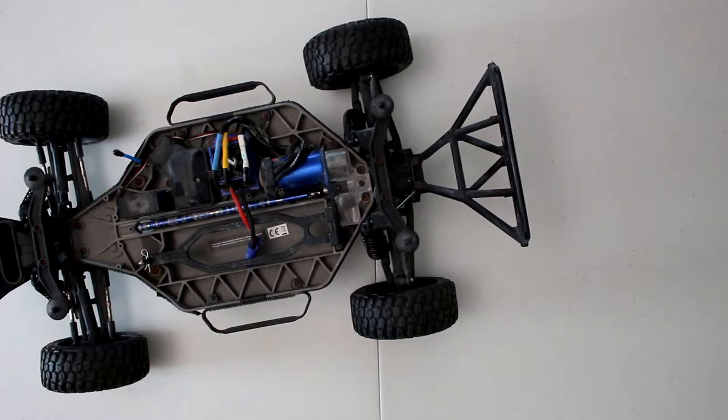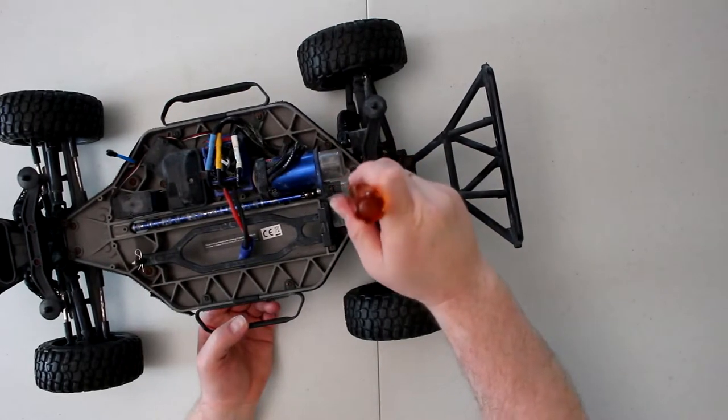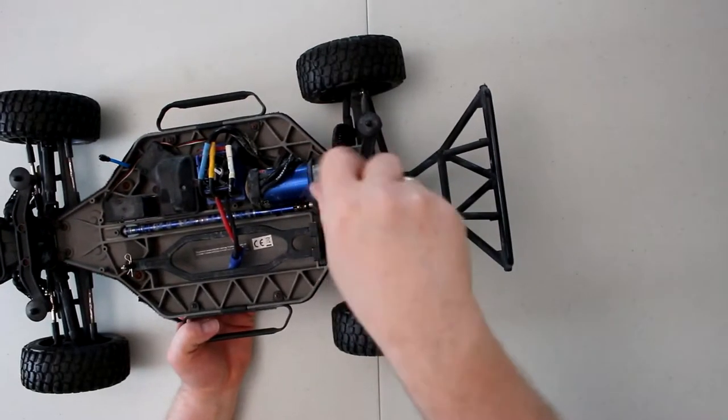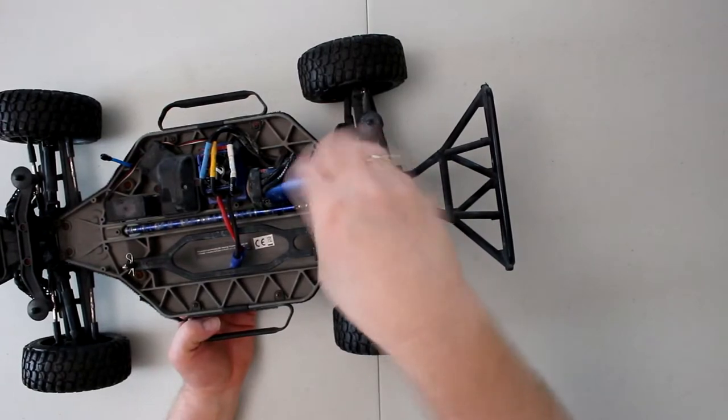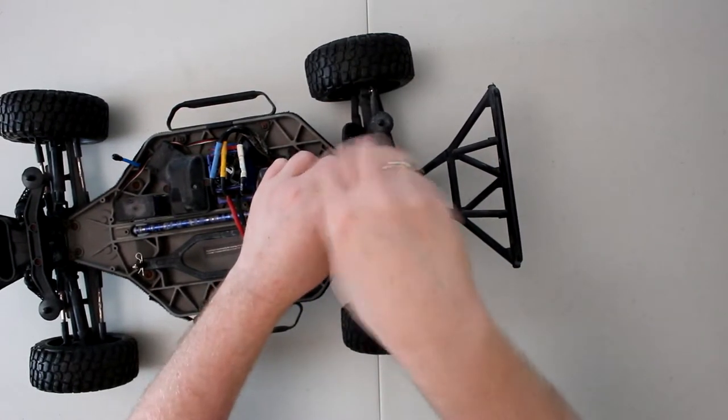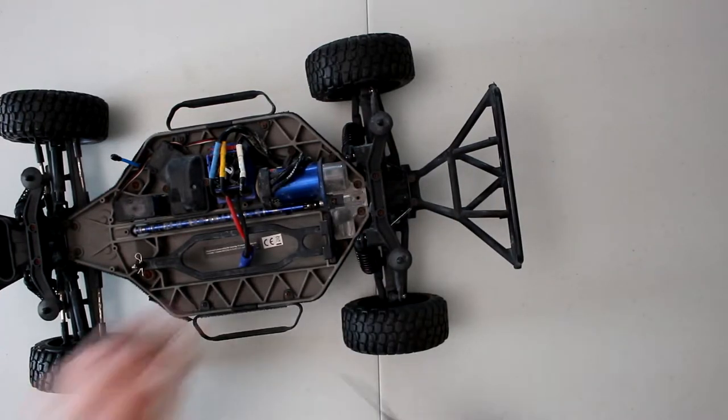It could be the ultimate version or just a Slash 4x4 normal. Very simple. We just need a 2mm to remove the spur gear cover. Now on this one here it is clear but usually on the Slash they are black.